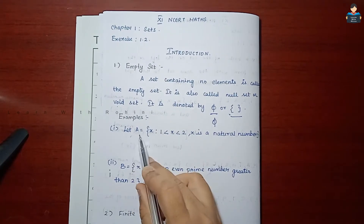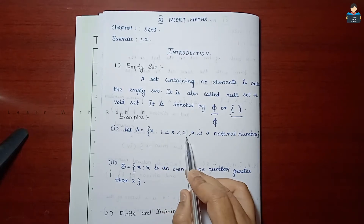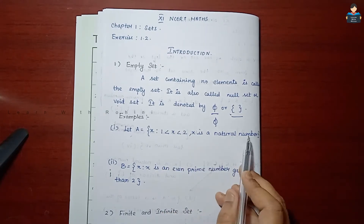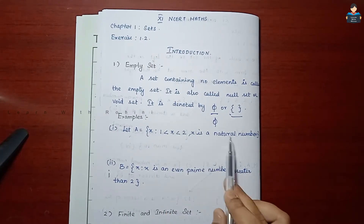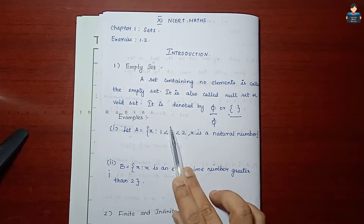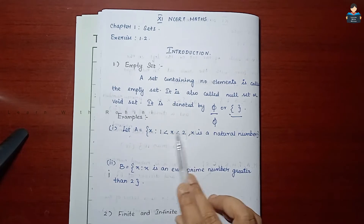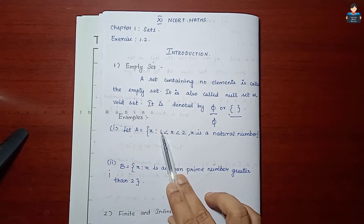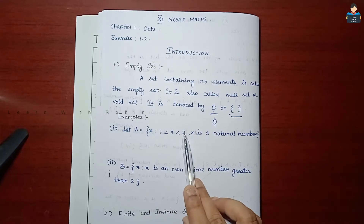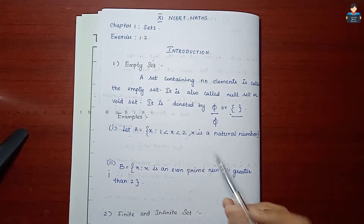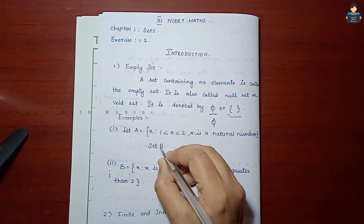Let A = {x : 1 < x < 2, x is a natural number}. Since x must be a natural number and its value must be between 1 and 2, there is no natural number between 1 and 2. So set A is a null set.